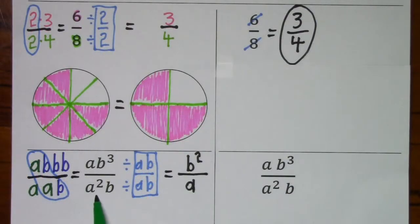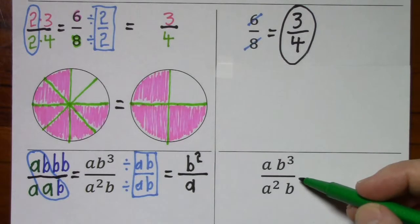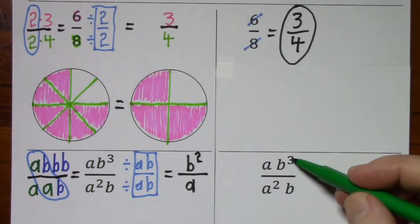So whenever you're given a fraction with variables and exponents, you can write it out in factored form and then, in effect, cancel the common factors. You can also use the rules of exponents. And especially as these exponents get larger, you're going to need to use the rules of exponents.